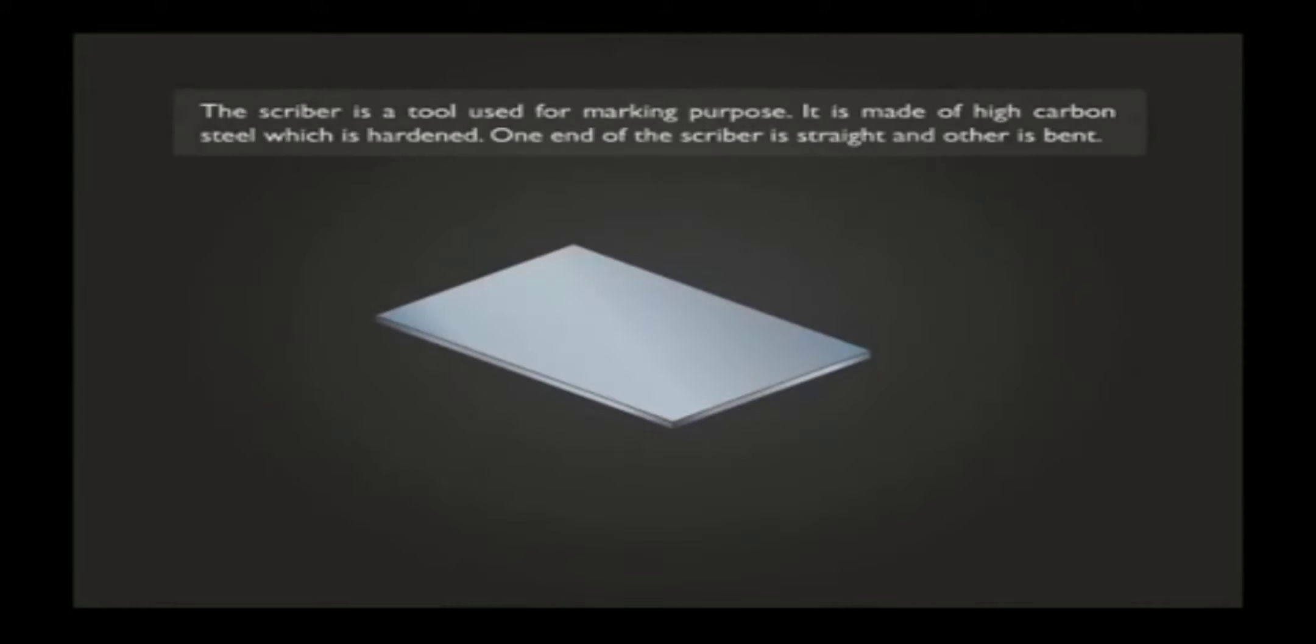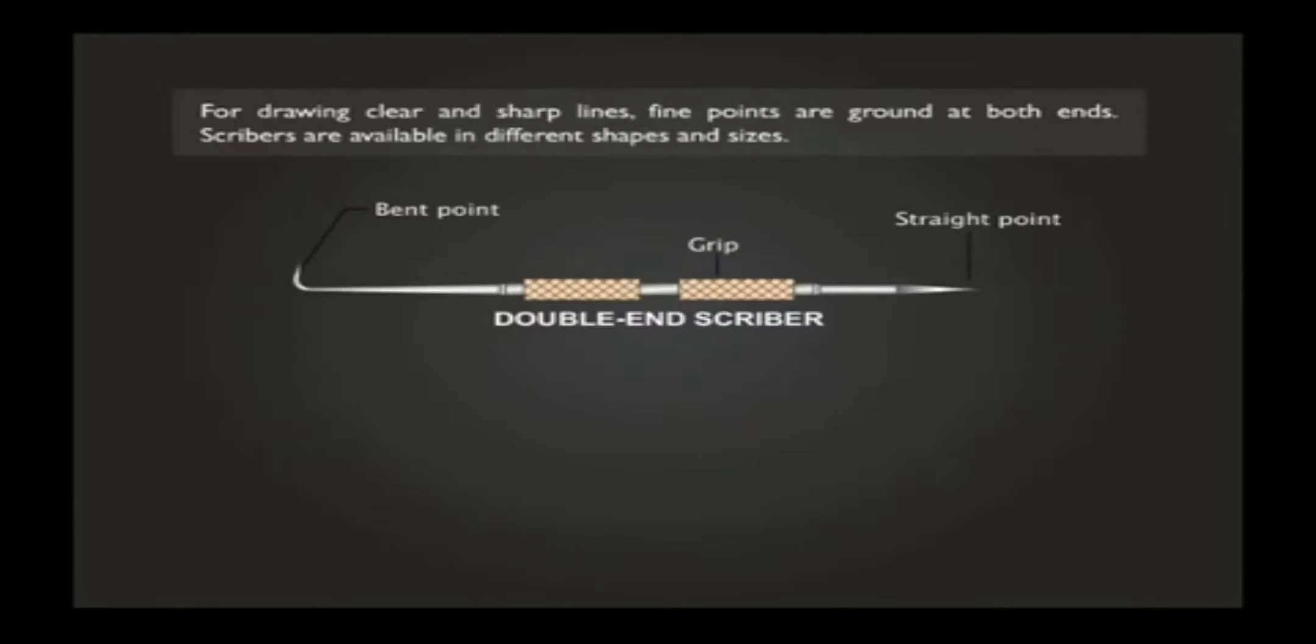The scriber is a tool used for marking purposes. It is made of high-carbon steel, which is hardened. One end of the scriber is straight and the other is bent. For drawing clear and sharp lines, fine points are ground at both ends.